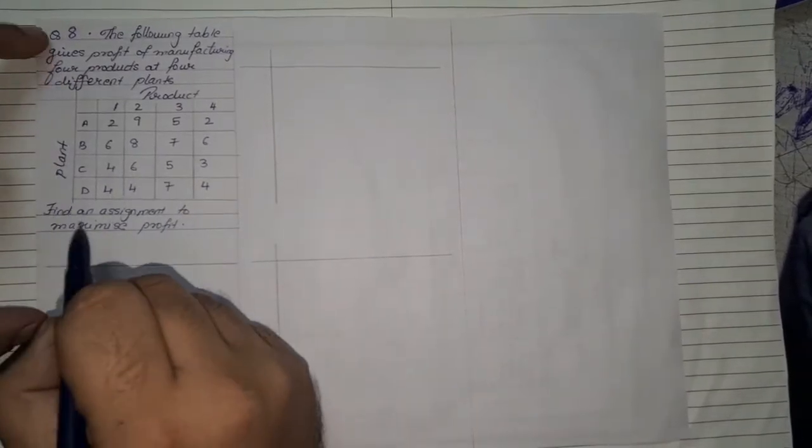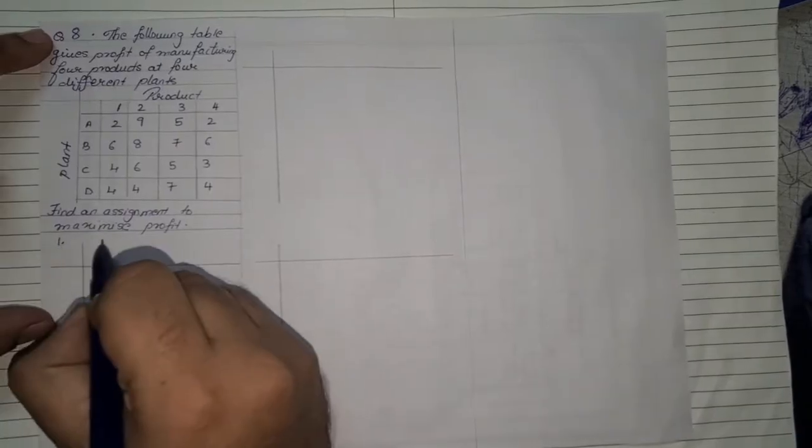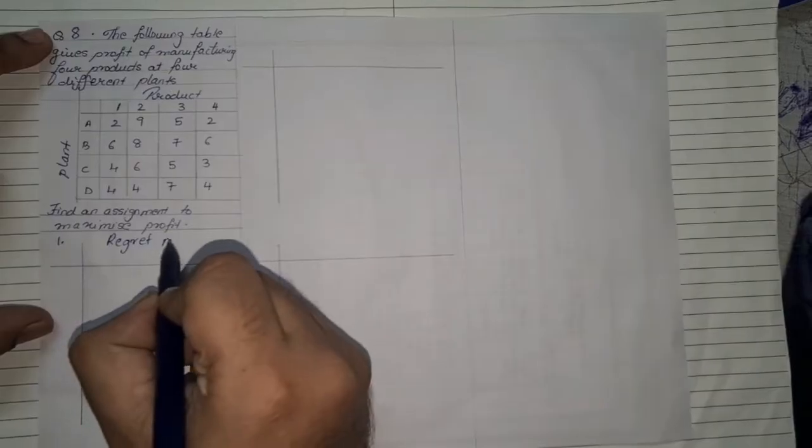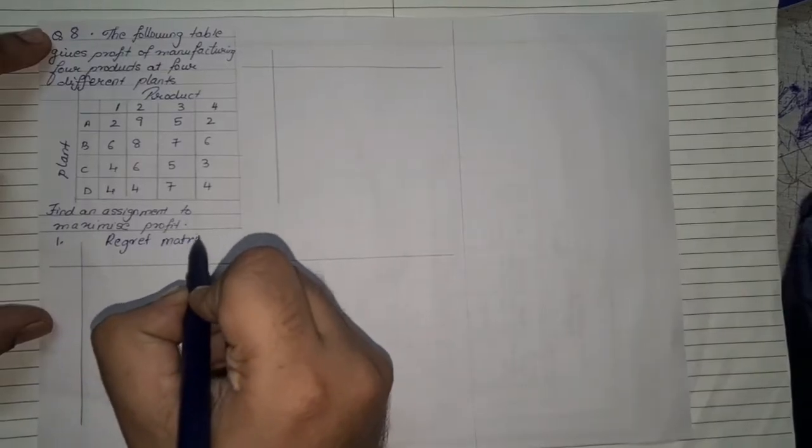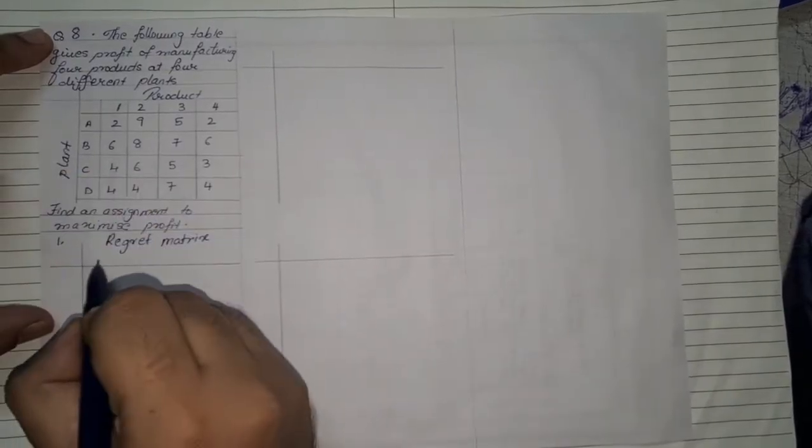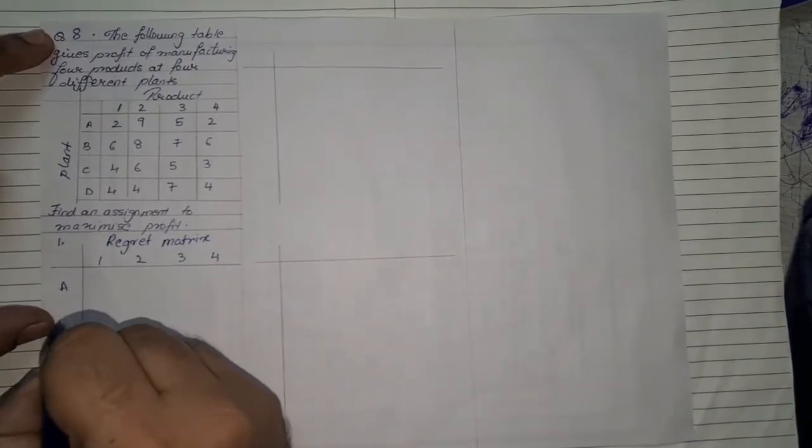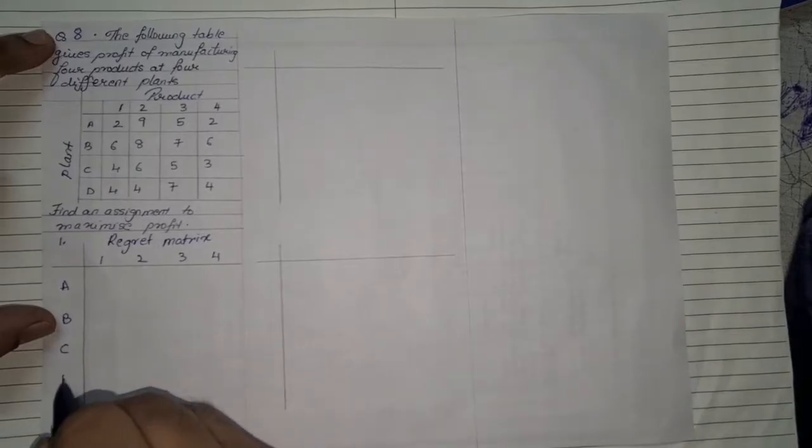Whenever you have been asked to find the sum using maximization, number one you will have to always create regret matrix. So the rule of regret matrix is that first you note down the table. You make a table which is similar structure. Here we have A, B, C and D.